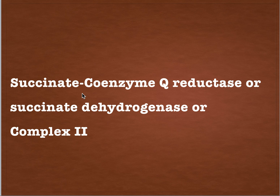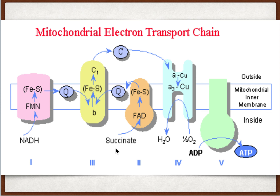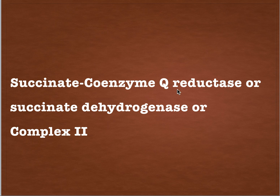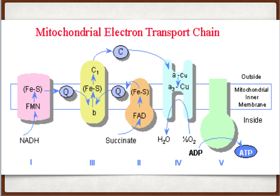Complex 2 is succinate coenzyme Q reductase. It is the second entry point into the electron transport chain, where succinate is oxidized to fumarate, releasing electrons in complex 2. Via FAD and iron-sulfur clusters, the electrons are accepted by coenzyme Q, also called ubiquinone, which is reduced — hence the name succinate coenzyme Q reductase. However, because this reaction releases less energy than the oxidation of NADH, complex 2 does not transport any protons across the membrane and so does not contribute to the proton gradient.